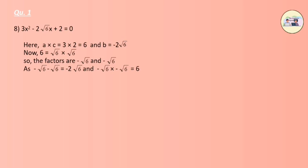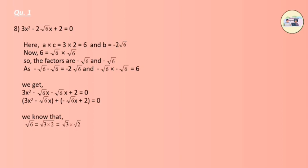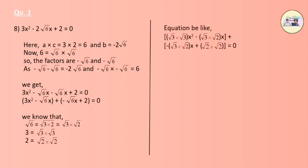When we add minus root 6 and minus root 6, we get minus 2 root 6, and when multiplied we get 6. Therefore the equation becomes 3x squared minus root 6 x minus root 6 x plus 2 equals to 0. We know root 6 can be written as root 3 into root 2, and 3 as root 3 into root 3, and 2 as root 2 into root 2. So the equation forms: root 3 times root 3 x squared minus root 3 times root 2 x minus root 3 times root 2 x plus root 2 times root 2 equals to 0.